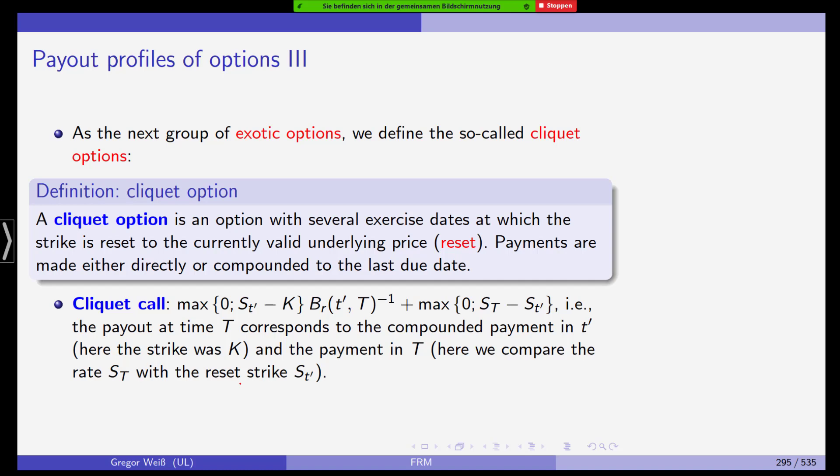Now, next group of exotic options, so-called cliquet options. A cliquet option is an option with several exercise dates at which the strike is reset to the currently valid underlying price. That's the reset. The payments are made either directly or compounded to the last due date. And as an example, we have a cliquet call, which pays you the maximum of 0, ST' minus strike, compounded, plus the maximum of 0, and the final underlying price minus the stock price at T', that is the reset date. So actually we take the first payment we got when the price was reset. We have to compound it. And then the next payment is the call that is reset. And this is the former strike K.